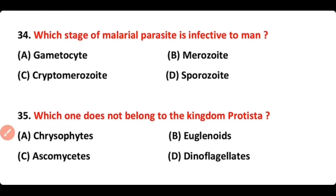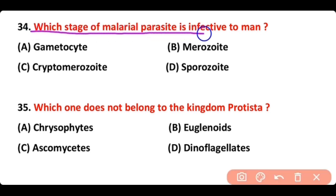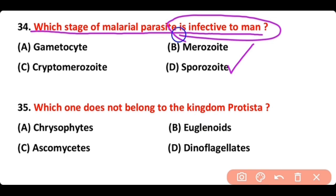Question number 34: Which stage of the Malarial Parasite is infective to man? The correct answer is option D. Sporozoite is the stage of the Malarial Parasite that is infective to man.